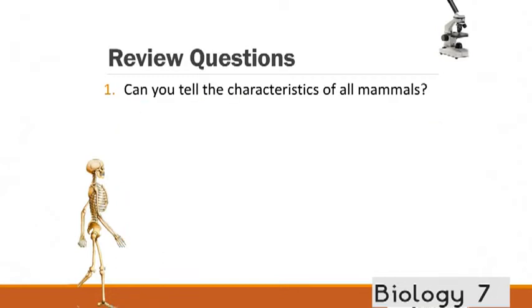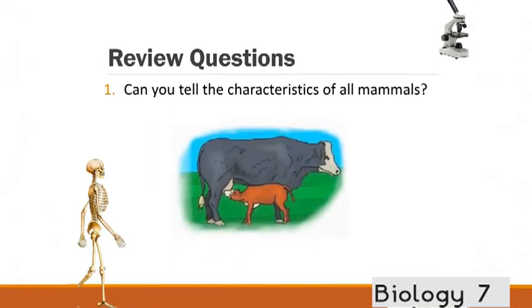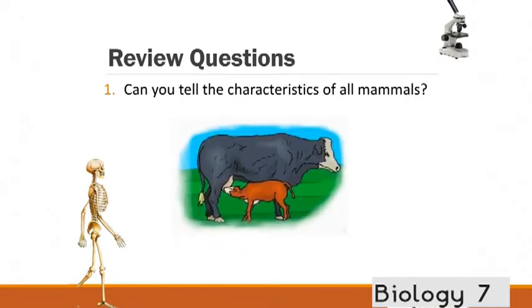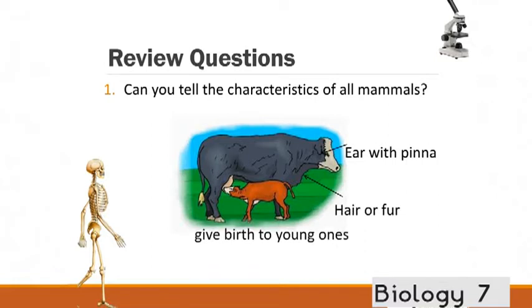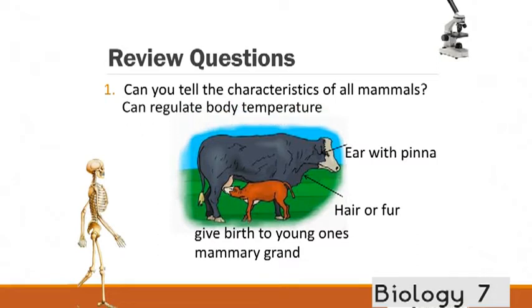Can you tell the characteristics of all mammals? They've all got ears with pinna. They've got hair or fur. They give birth to young ones. They breastfeed with that mammary gland. And they can regulate their body temperature, often known as warm-blooded.